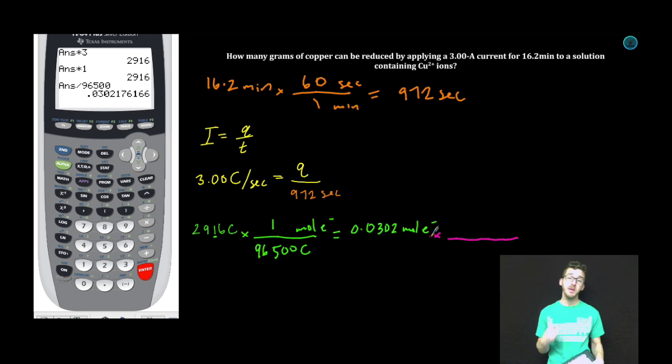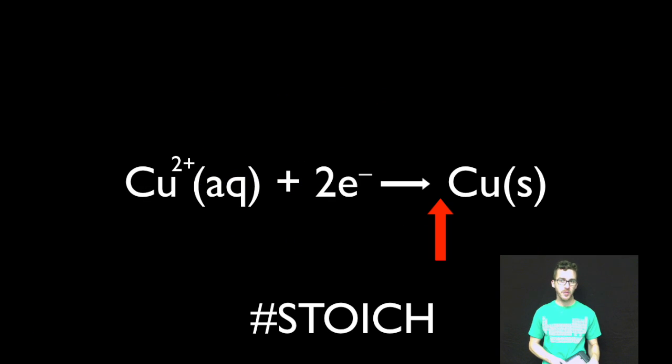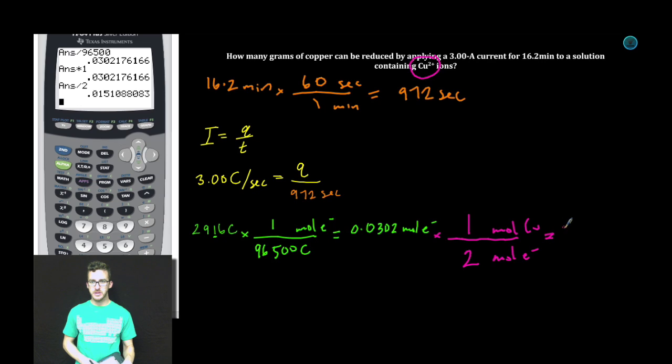My next step is to figure out how many moles of copper will have plated out if I know my number of moles of electrons. Now, as I think about the fact that it's copper two plus, for every one mole of copper that's plated out, it's going to require two moles of electrons. For every one mole of copper that's plated out, it's going to require two moles of electrons equals 0.0151 moles of copper that plated out or that could be reduced.